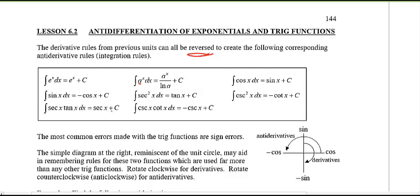The integration of cosecant squared x of course is negative cotangent x plus C, integration of secant x tangent x is secant x plus C, and cosecant x cotangent x is negative cosecant x plus C. Now the most common errors with trig functions of course are sign errors.